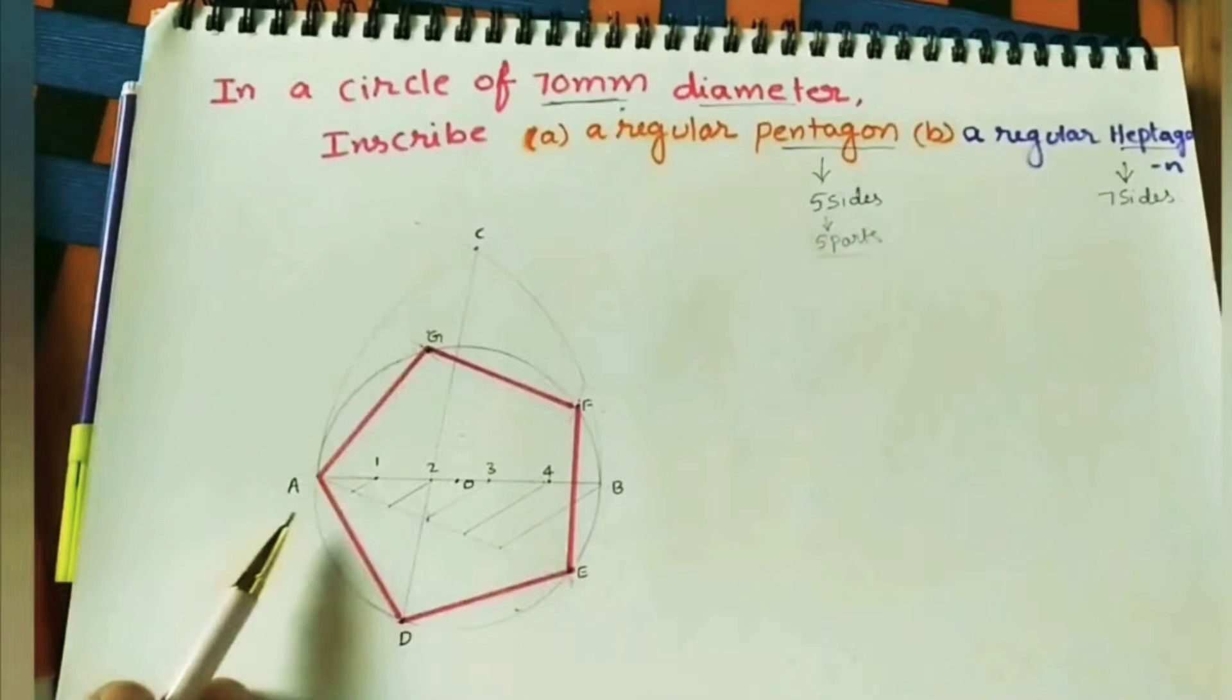Hi friends, in this class we will do polygon by using inscribe circle method. We can do any polygon in a given circle by using this method. Here we will do the pentagon.